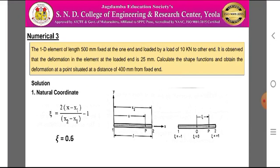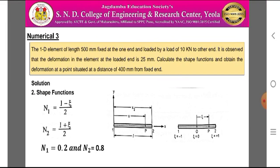To evaluate the natural coordinate: ε = 2(X - X1)/(X2 - X1) - 1. Substituting X = 400, X1 = 0, X2 = 500, we get ε = 0.6. For the shape functions: N1 = (1 - ε)/2 and N2 = (1 + ε)/2. Substituting ε = 0.6, we find N1 = 0.2 and N2 = 0.8.